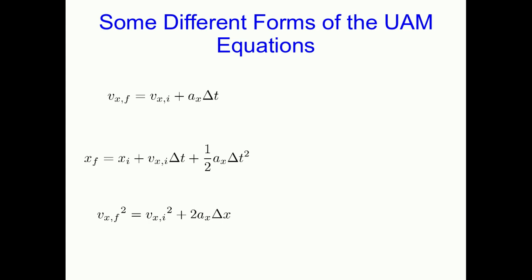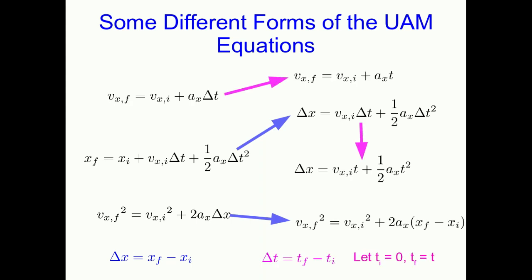The other thing that's going to be useful is going to be to realize that you can put these into some different forms, and you've already seen some of this. You can use delta x is xf minus xi to rewrite things, and you can also use delta t and let your ti be 0, because you can always set when t is 0, then you only have one time, and so you might as well just call it t.